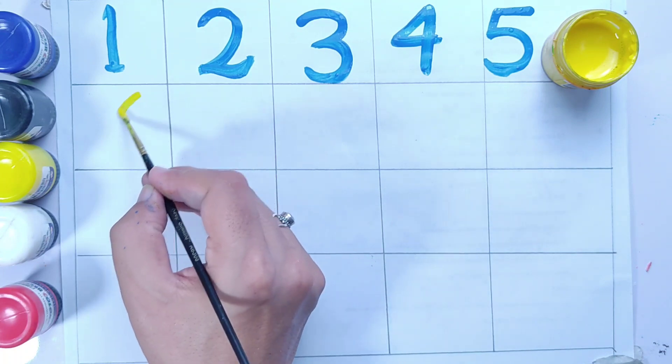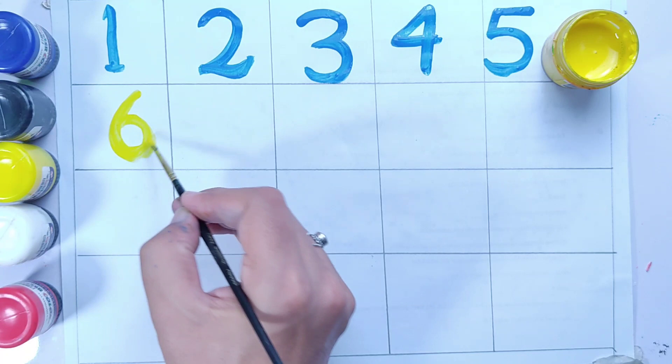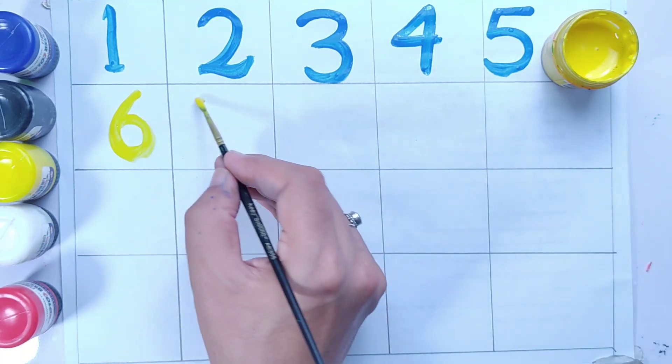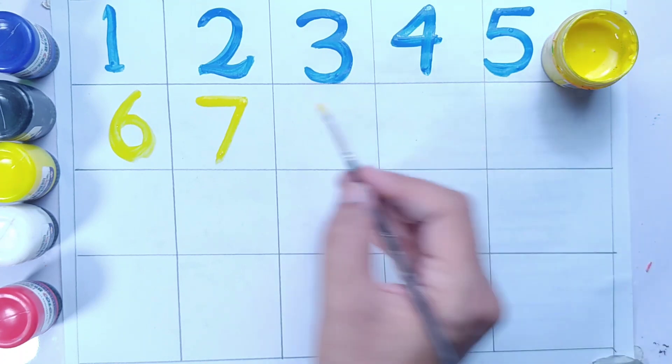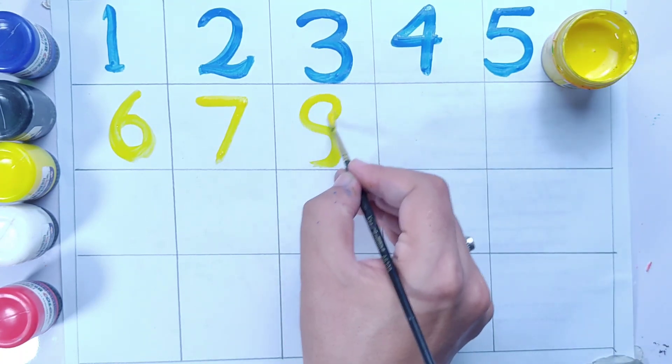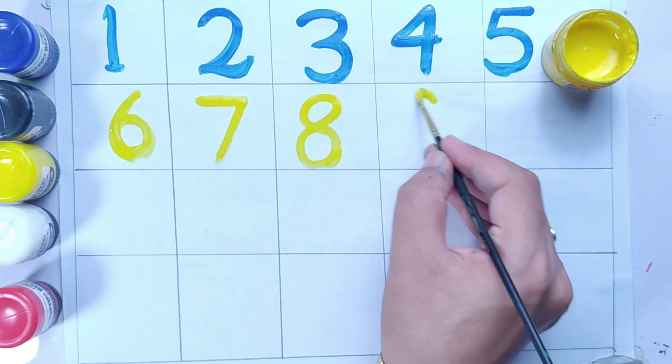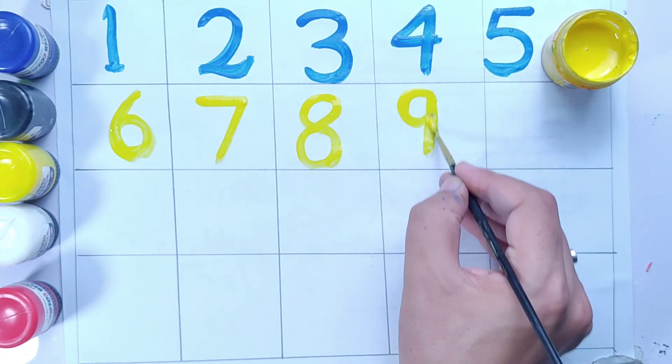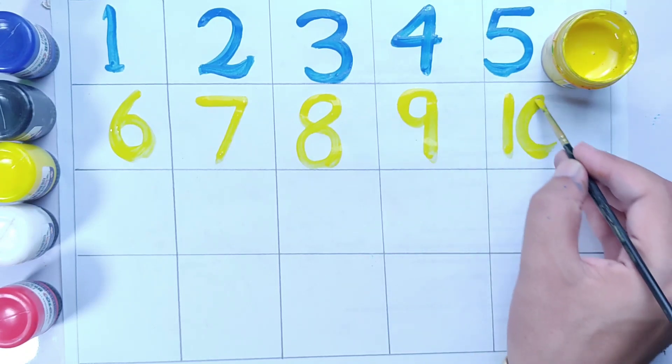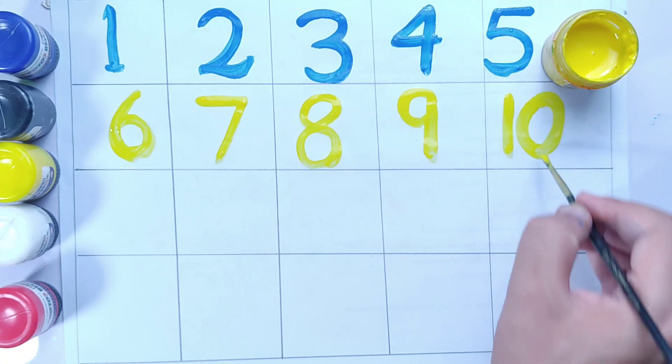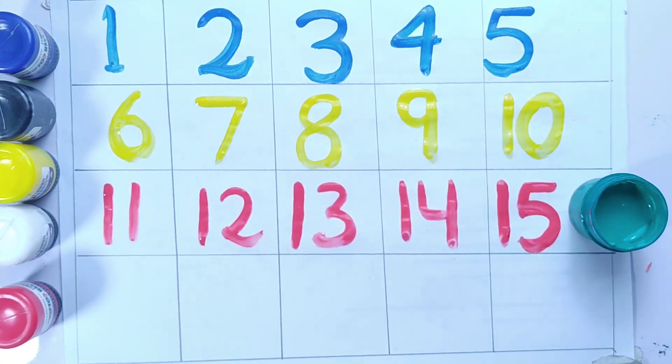Here we have yellow color. Number six, yellow color, number six. Seven. Eight. Nine. Ten, ten. Number ten, dark green color.